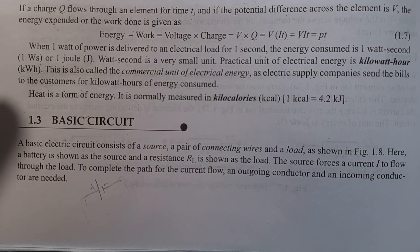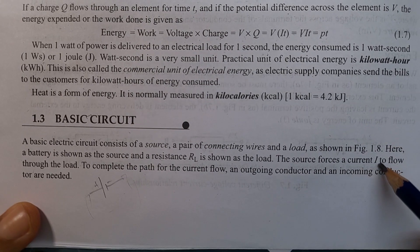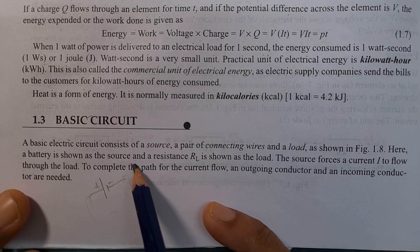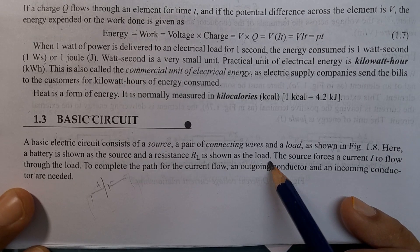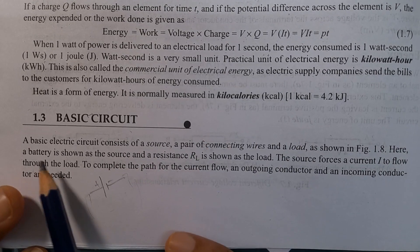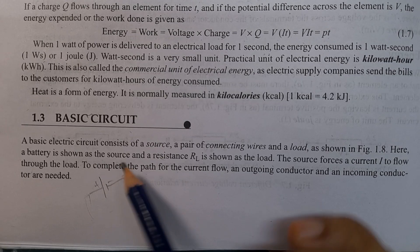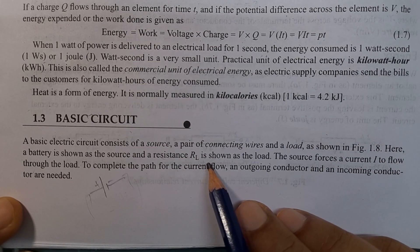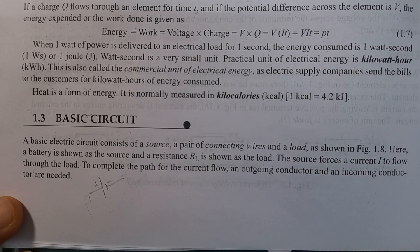As shown in Figure 1.8, a battery is shown as the source and a resistance RL is shown as the load. The source forces a current I to flow through the load.